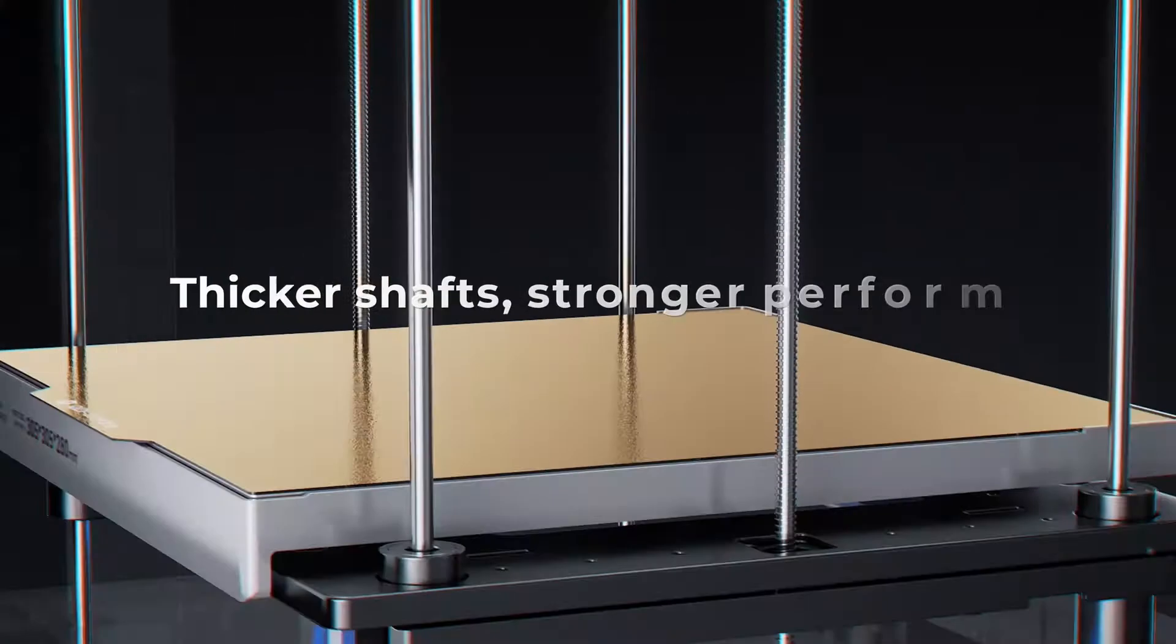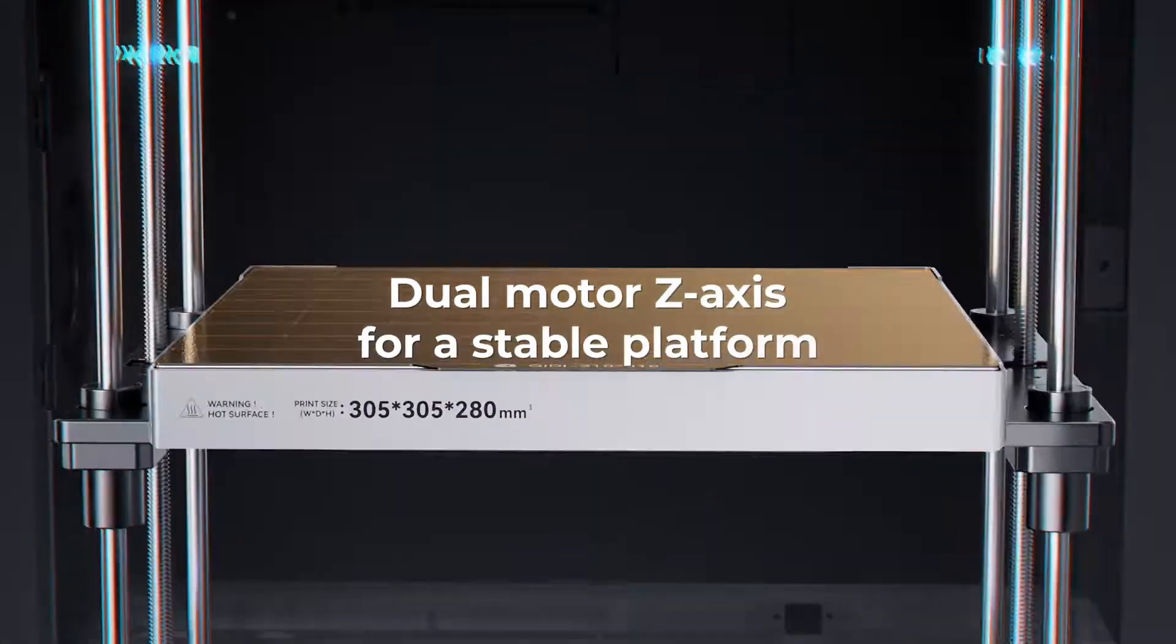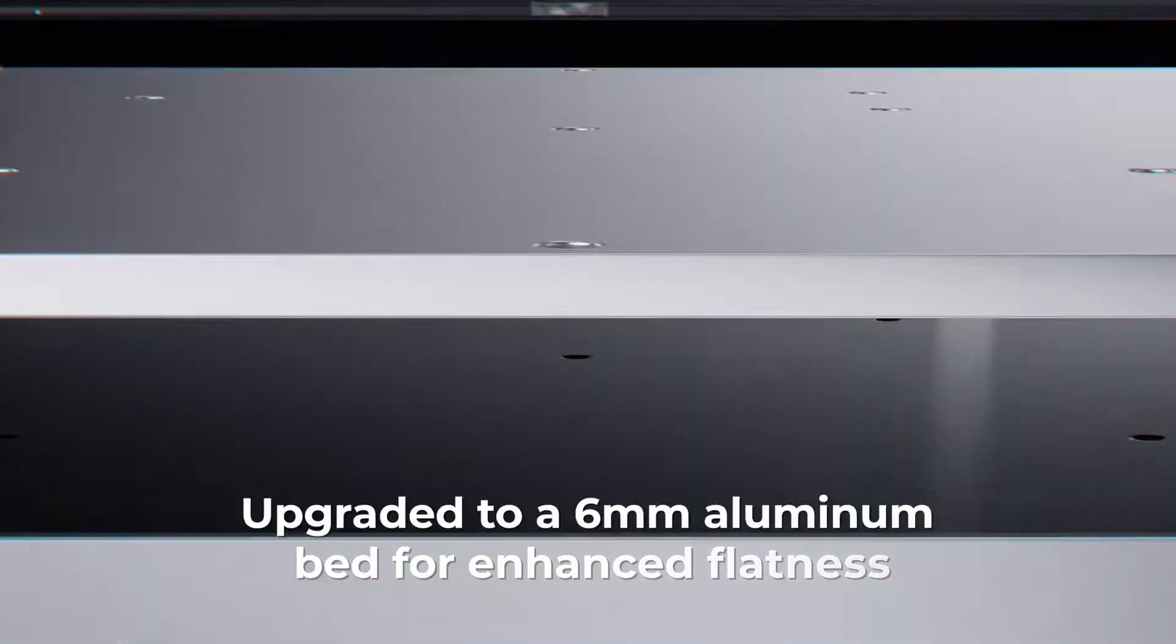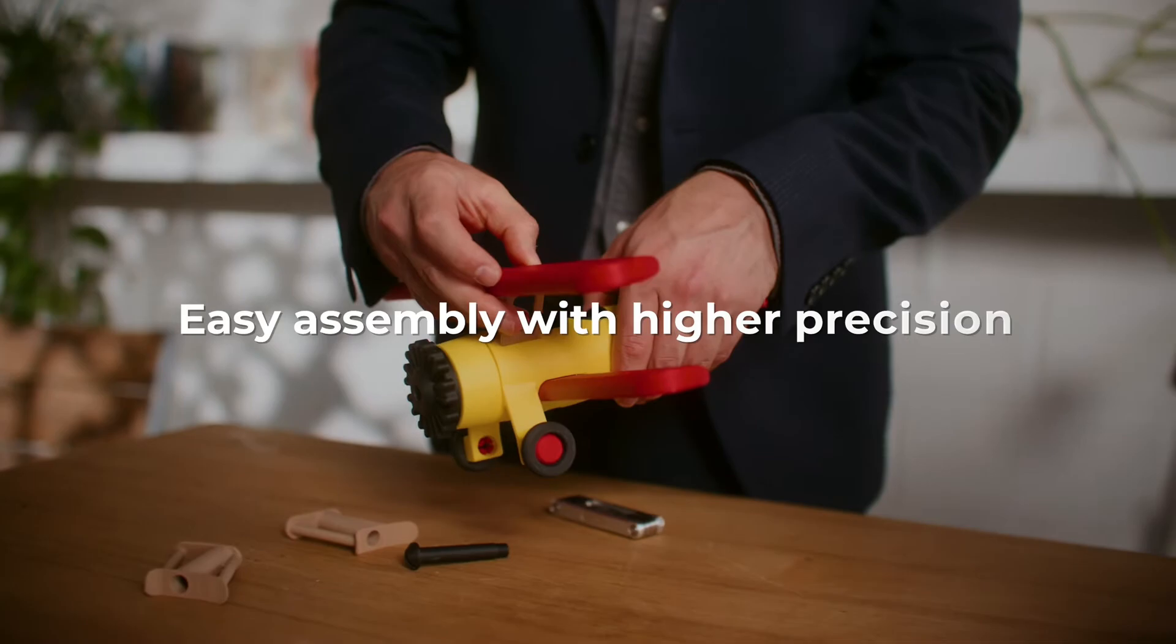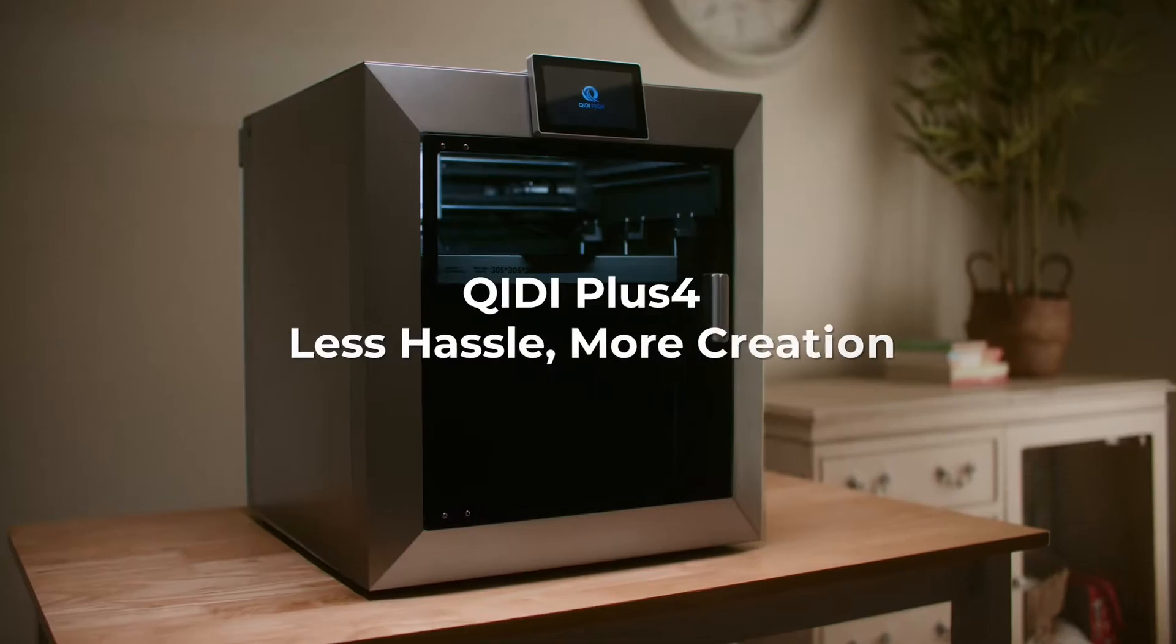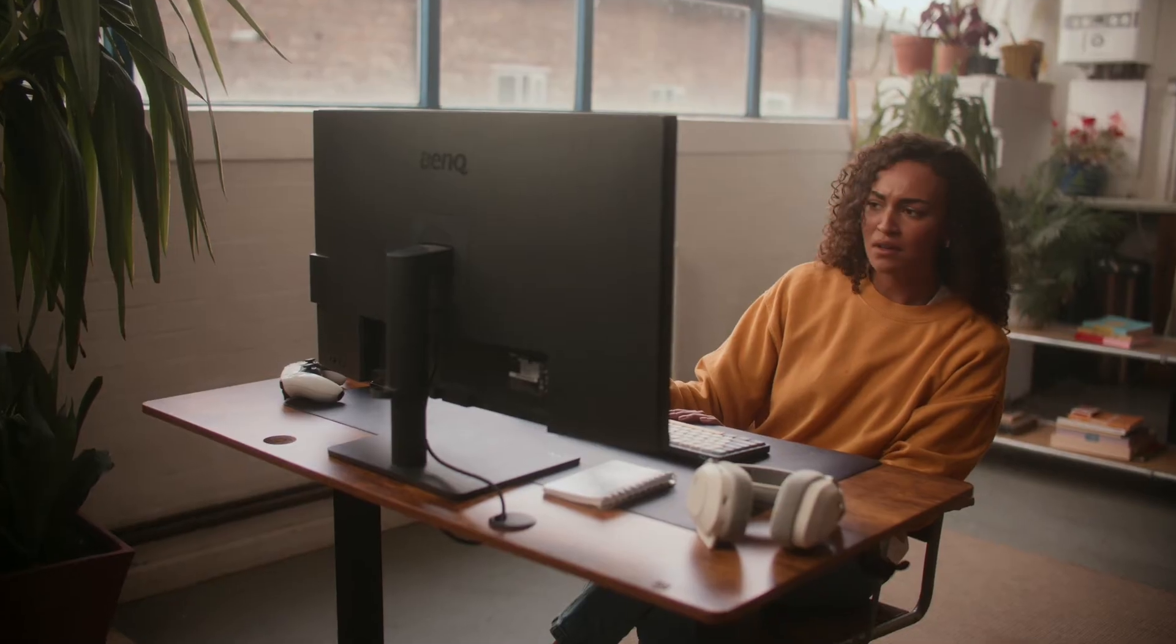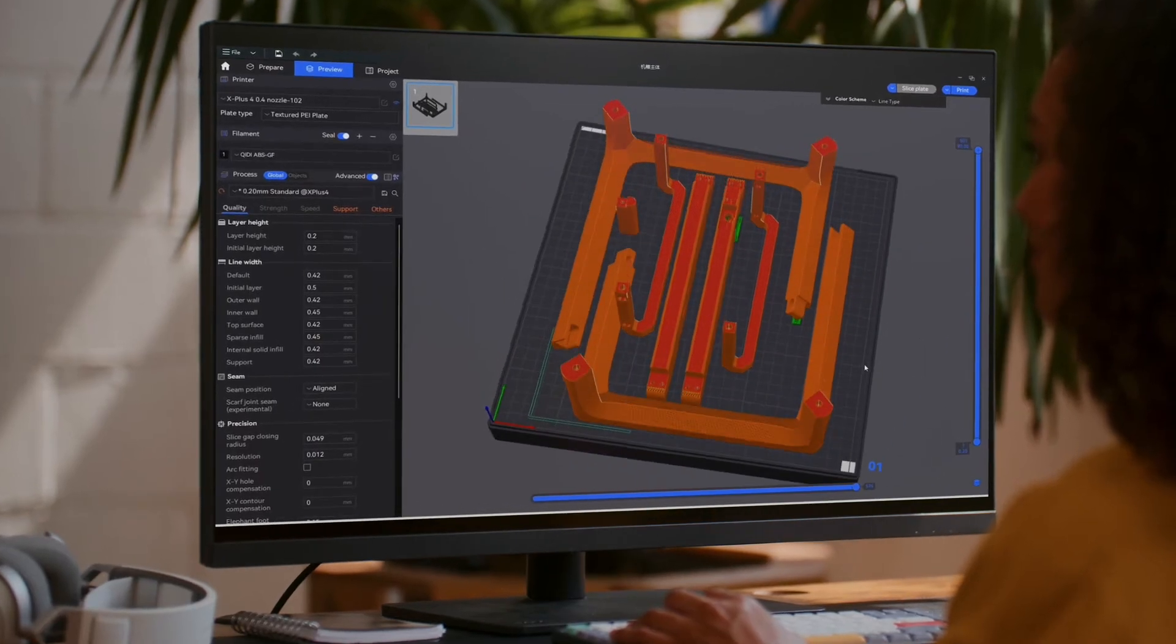Its CoreXY structure, inherited from the X Plus 3, makes it ideal for both professionals and beginners who need faster, more efficient printing. The second-generation chamber heating system with 400 watts of power provides excellent air circulation and dual-layer insulation, creating a balanced and consistent temperature. This helps reduce warping and cracking, particularly when printing high-temperature filaments, enhancing print quality.